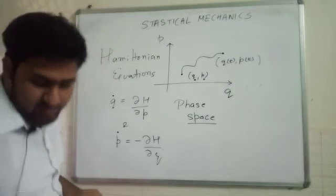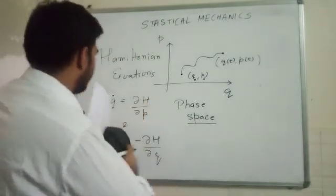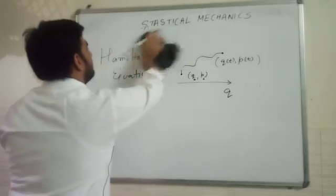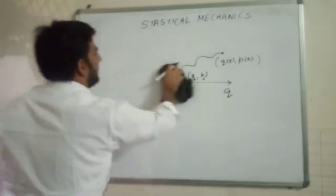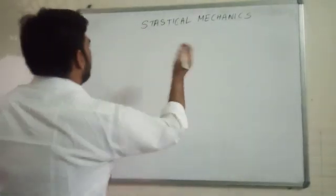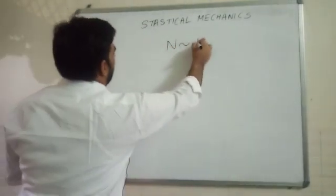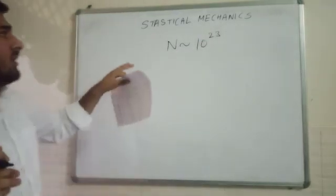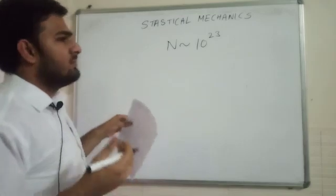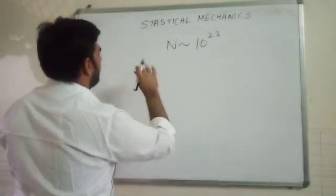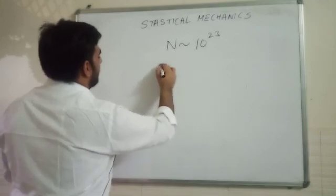Now, we can use this formulation in statistical mechanics. Because statistical mechanics consists of a lot of particles. We will be dealing with particles which are on the order of 10 to the 23. These are a lot of particles, but there are certain limitations. According to Hamiltonian mechanics,